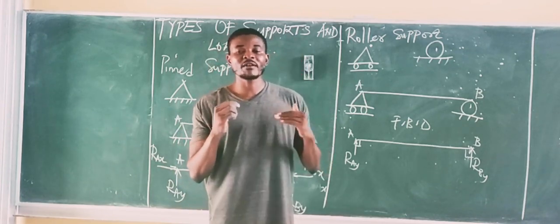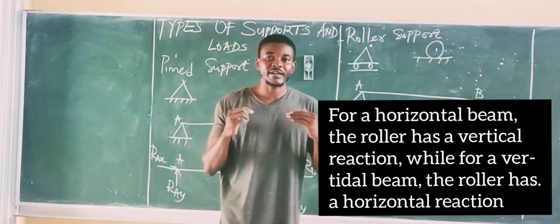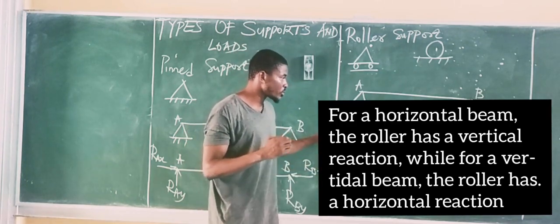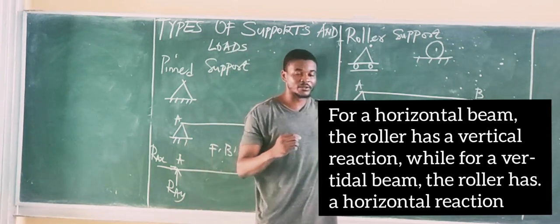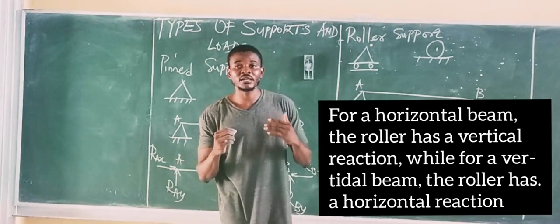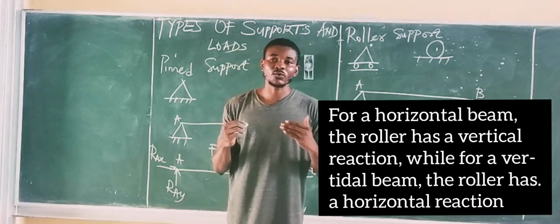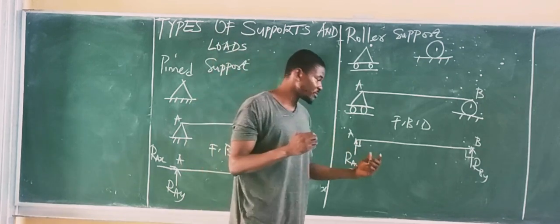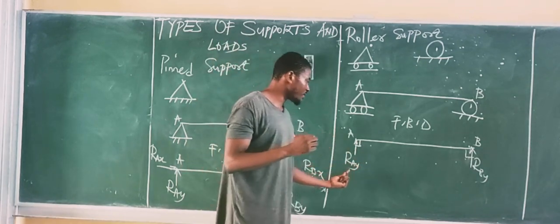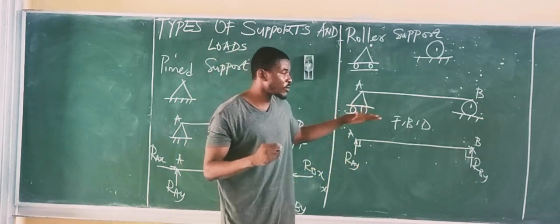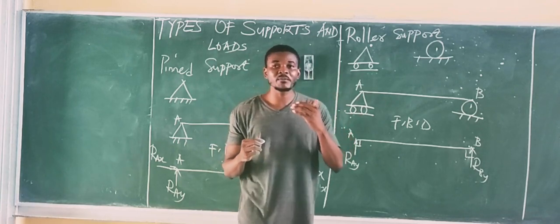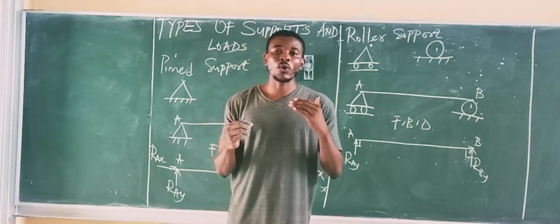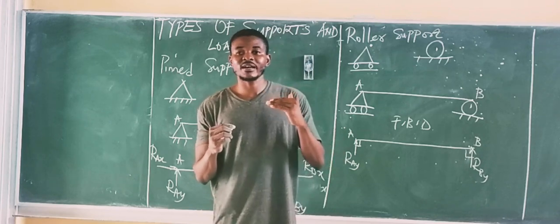It is clear that whenever the beam is horizontal, the reaction for the roller is always a vertical reaction. Whenever the beam is horizontal, the reaction for the roller is always vertical. For a vertical beam, the reaction for the roller is always horizontal.